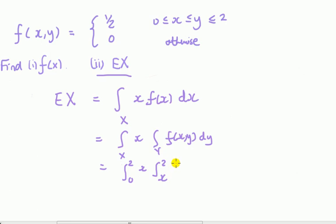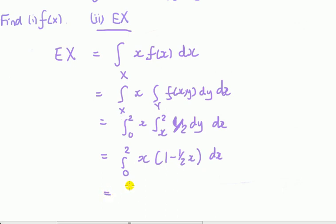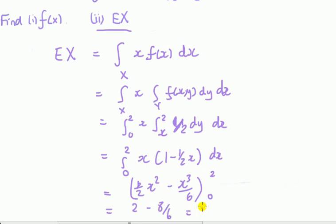And then f, the joint, which is one half. Now what we're doing here is we're doing the inner one first, with respect to y, and you're going to get 1 minus half x dx, and now integrate this whole thing with respect to x. That comes to half x squared minus x cubed over 6, between 2 and 0. And then 2 minus 8 over 6 gives me 2 thirds. So that's the answer.